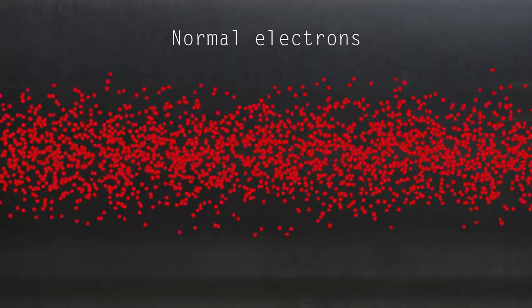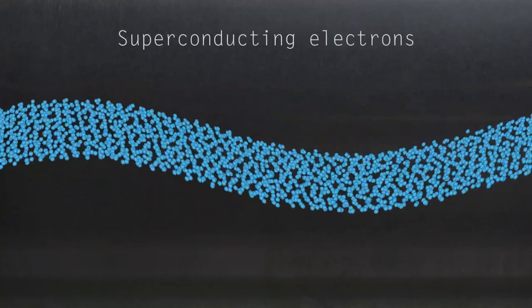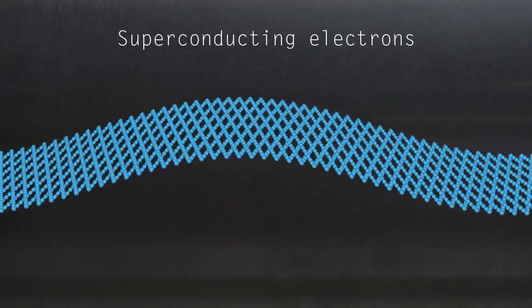So the thing about a superconductor is that when you cool it down below a certain temperature all of the electrons really collapse into the same quantum state. In a sense they cooperate with each other in the way that electrons in a normal metal don't.